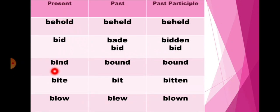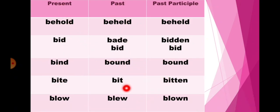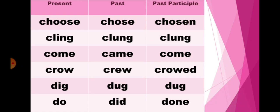In present if it is bind, then in past it will be bound, and past participle also bound. In present bite, then in past it will be bit, and past participle bitten. In present blow, then in past it will change into blew, and past participle blown.